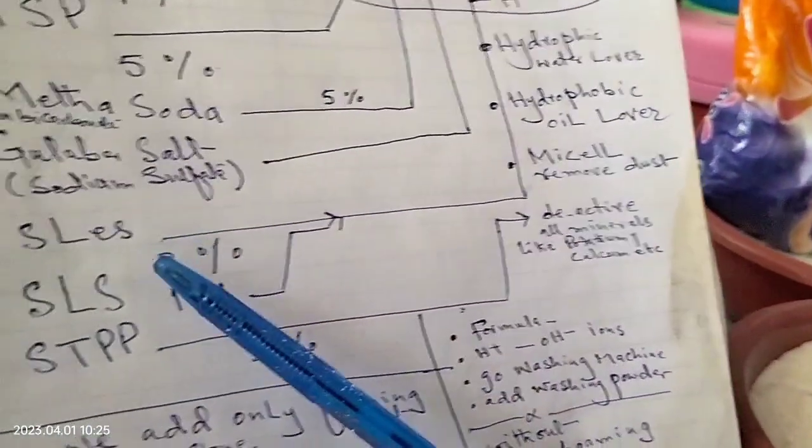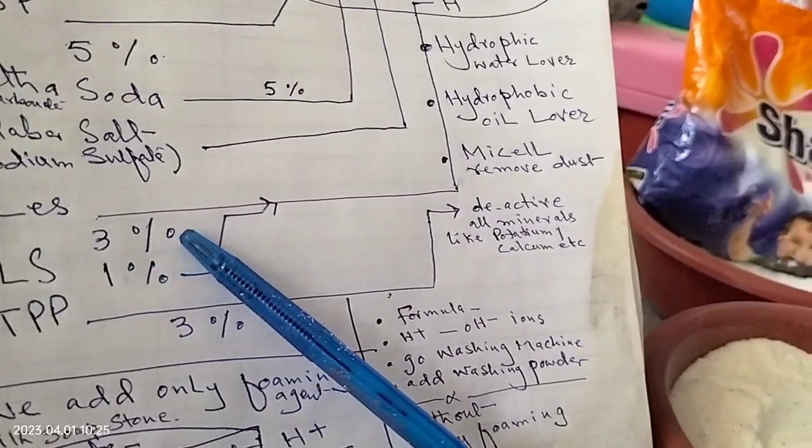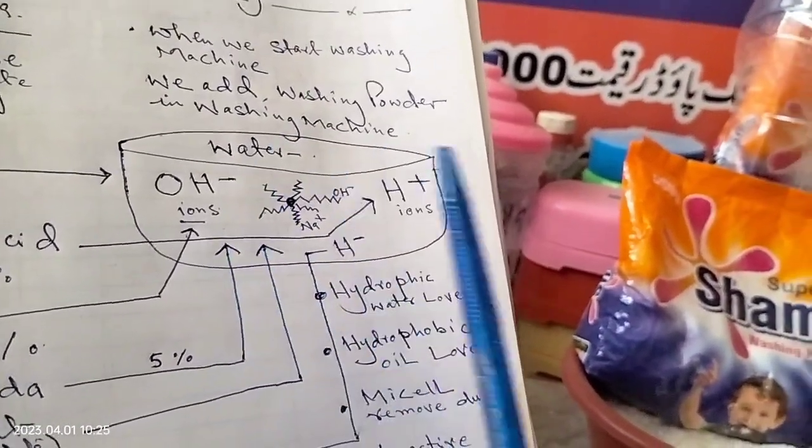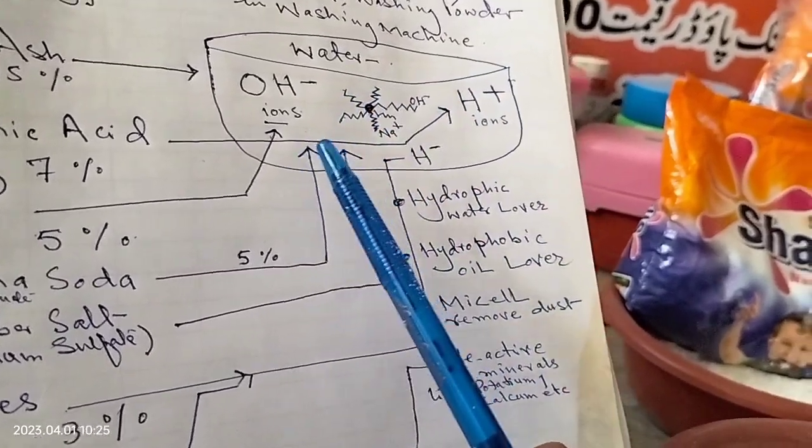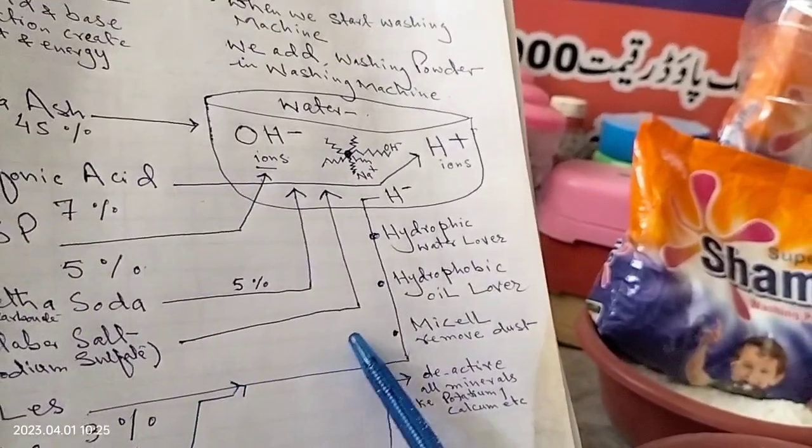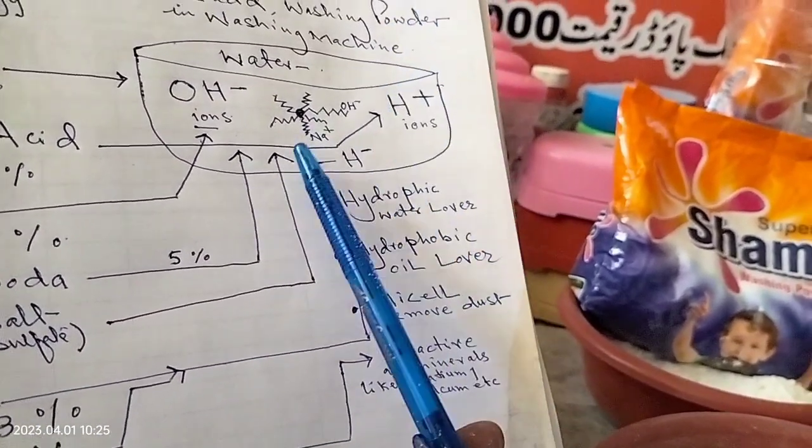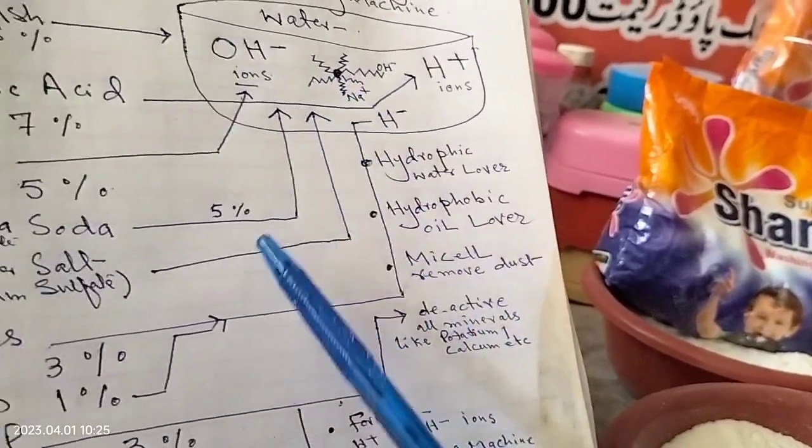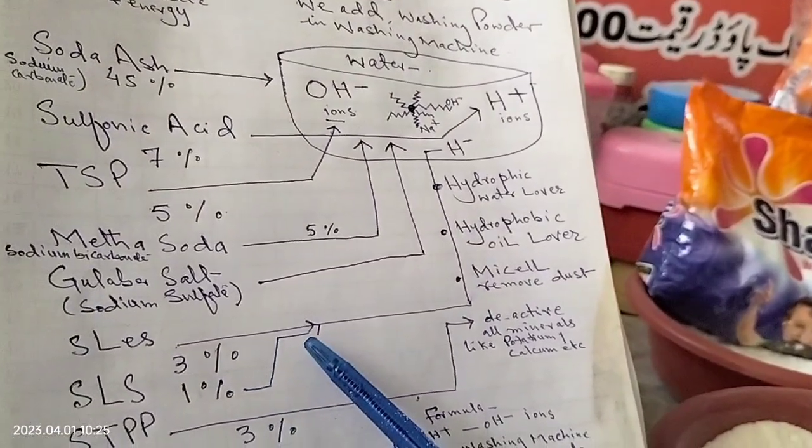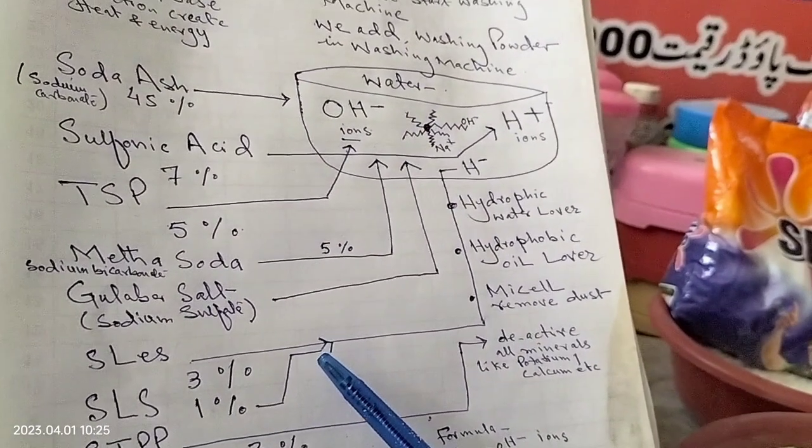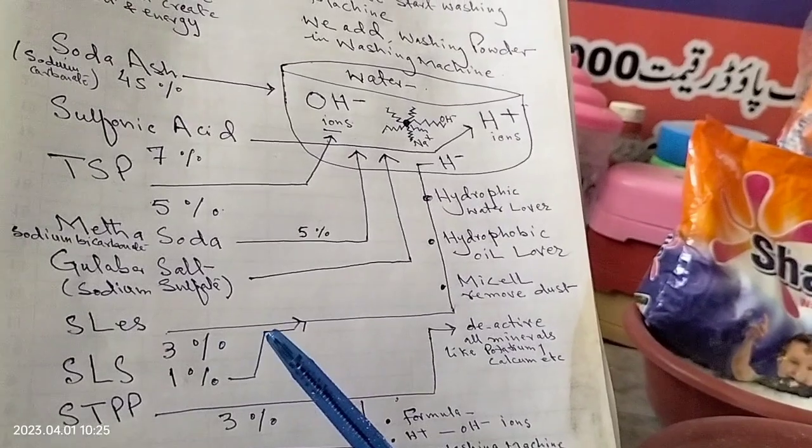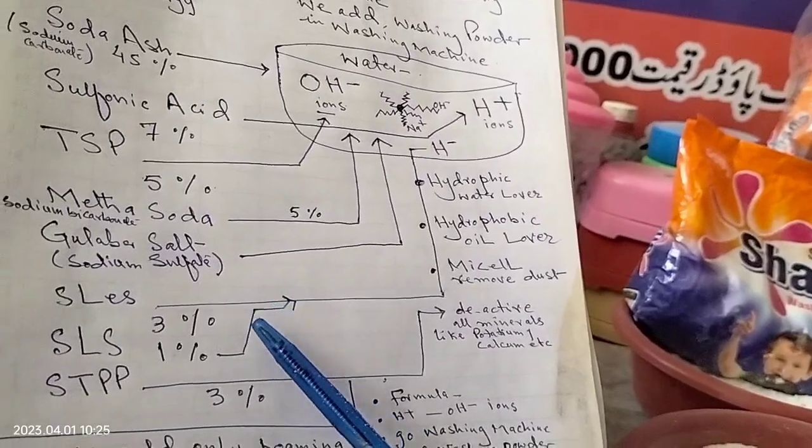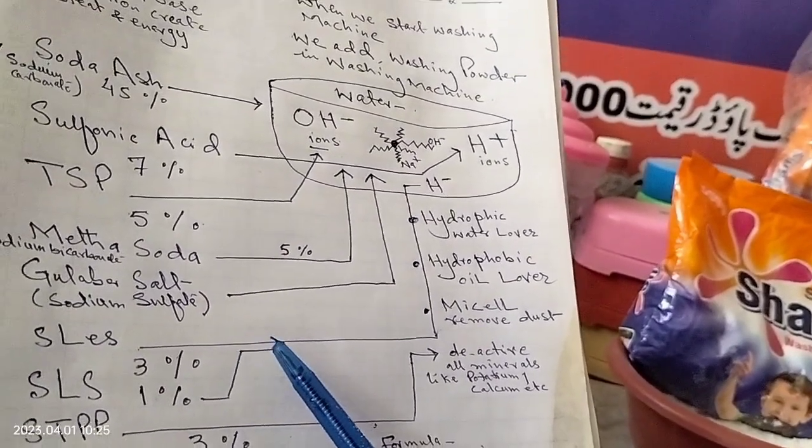SLES shampoo based 3%. SLES creates foaming, creates hydrophilic, creates only foaming agent, not the remover of dust, not the remover of oil. Shampoo base only creates hydrophilic, water lover. These chemicals not remove dirt, not remove cleaning of cloth. These are only foaming agent, only create hydrophilic.